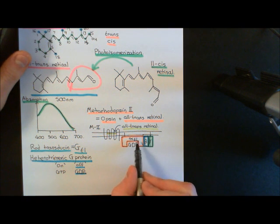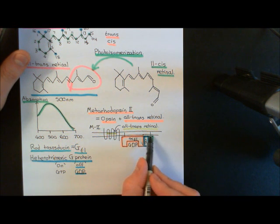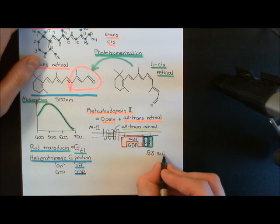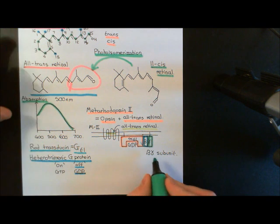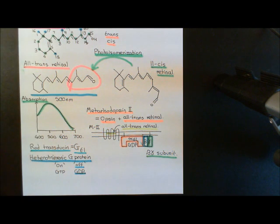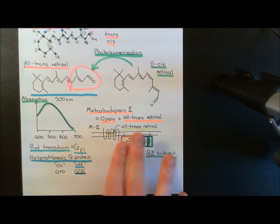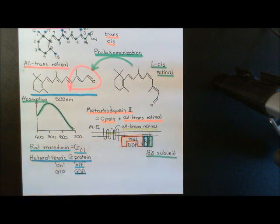Currently, our rod transducin heterotrimeric protein is in the off state. The alpha subunit has GDP bound to it, and in that state it wants to bind to the beta-gamma subunit — the beta and gamma subunits always remain bound together, so we refer to them collectively as the beta-gamma subunit. This entire off-state rod transducin is bound to our rhodopsin receptor. When the photon comes and photoisomerizes the 11-cis retinal into all-trans retinal, the rhodopsin turns into metarhodopsin-2, which is now capable of binding to the rod transducin in a new way and causing its activation.